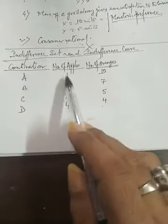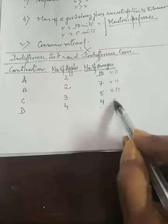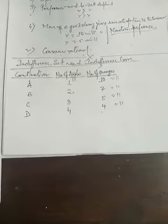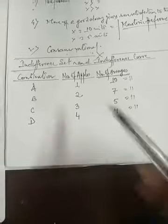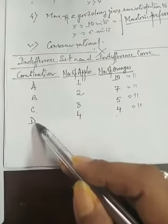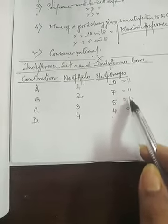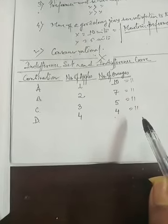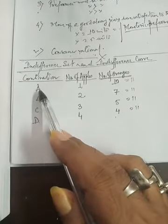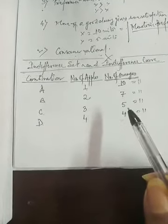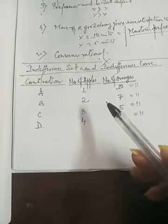From this schedule, it is clear that in every combination A, B, C, D, the consumer's total utility — his total satisfaction — is the same. Whether he chooses position A, B, C, or D, his total satisfaction remains the same. Since there is no difference in satisfaction among the points A, B, C, D, the consumer is indifferent among them.